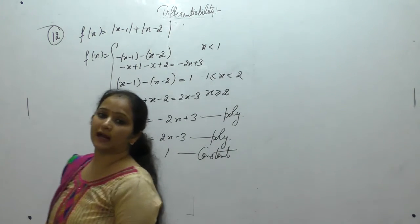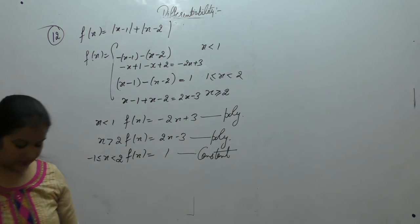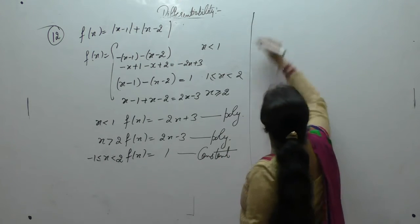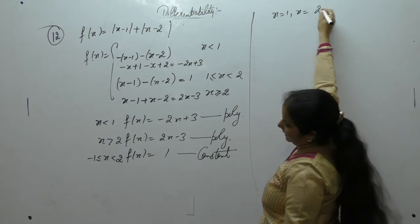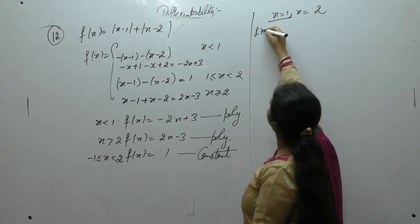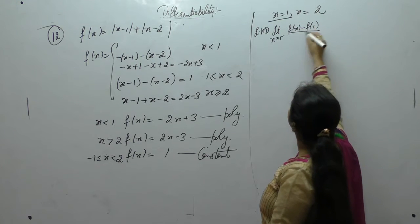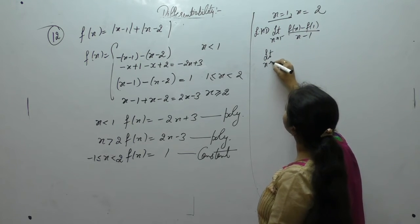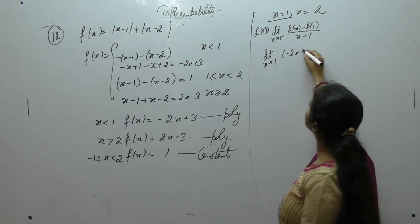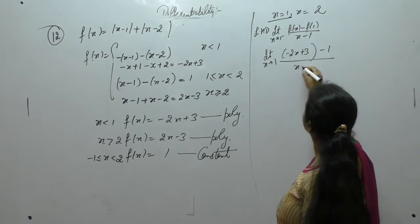Constant functions and polynomial functions are continuous and differentiable. So we only need to check differentiability at x = 1 and x = 2. For x = 1, the left hand derivative is the limit as x tends to 1 negative of [f(x) − f(1)] / (x − 1). When x < 1, the function has value −2x + 3, and f(1) = 1.